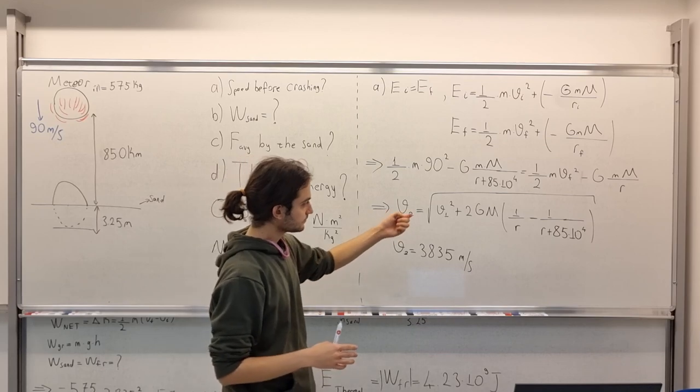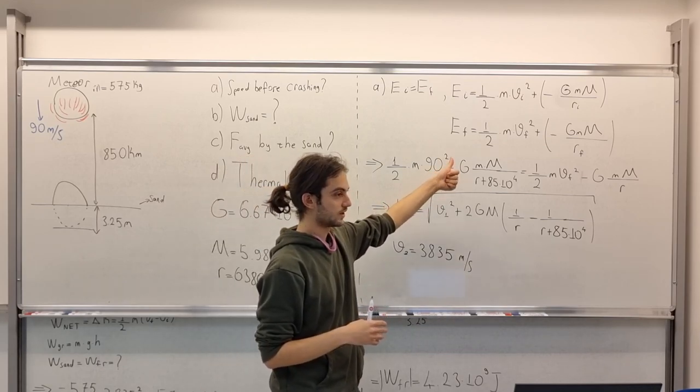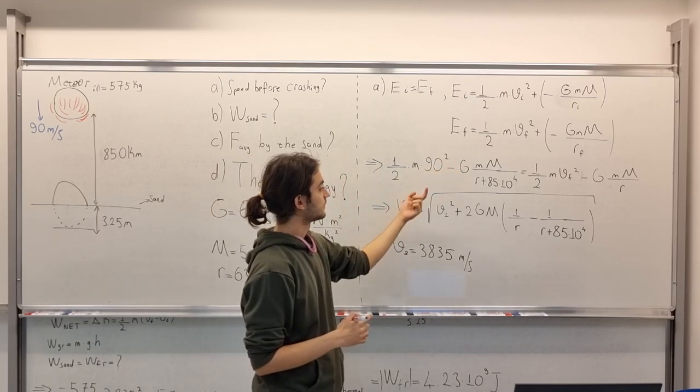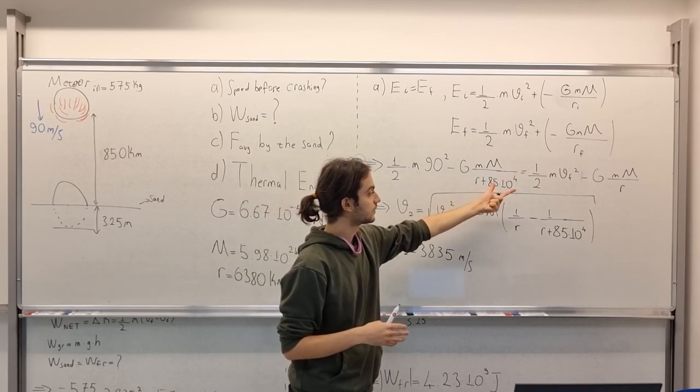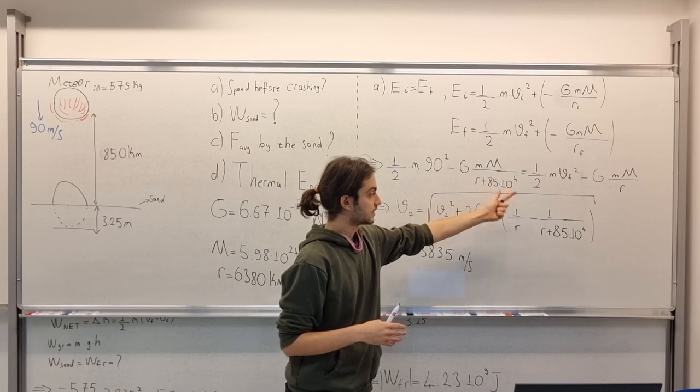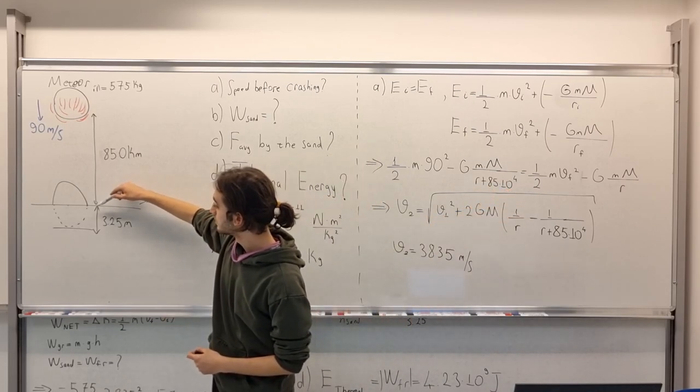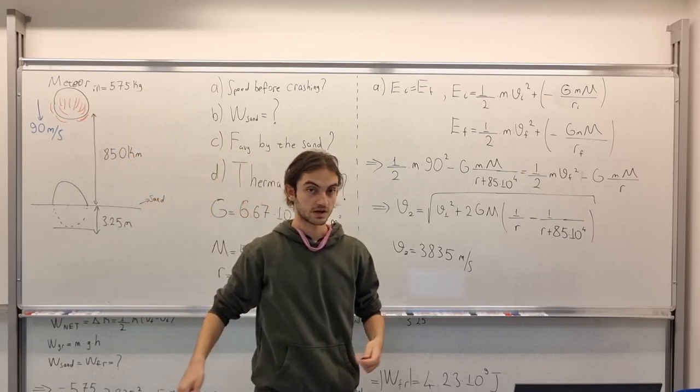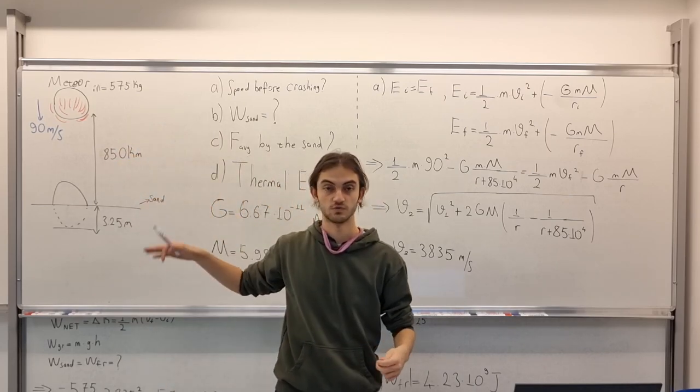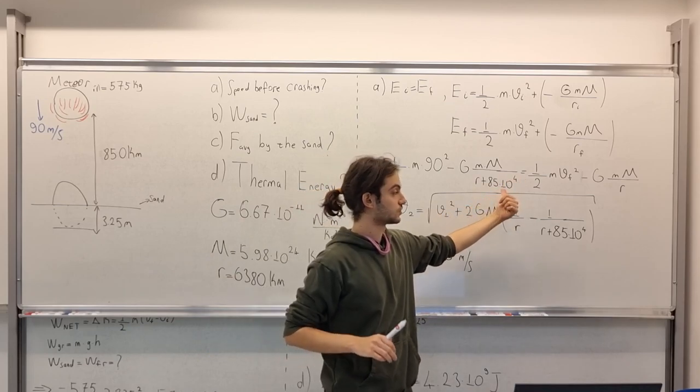Times 90 squared. Remember, I'm using the m per second here. So I need to convert this which is the distance from the surface to the meteor, which is 850 km. But I have to convert it to meters.